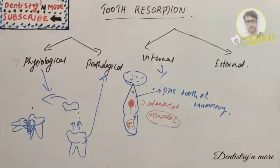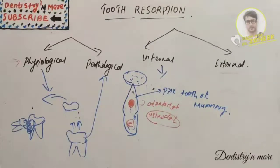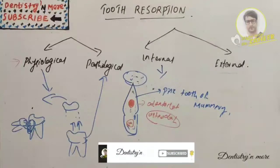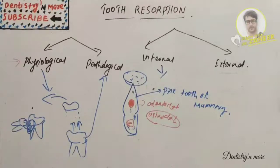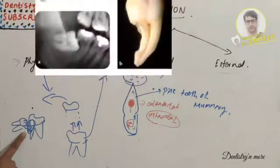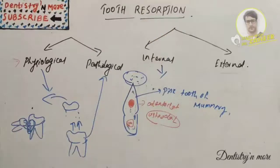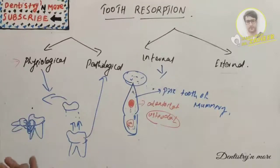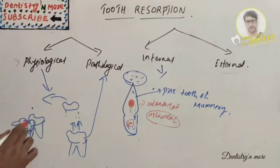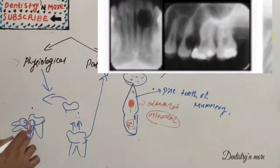External resorption refers to an attack on the root's external edges, slowly dissolving and weakening the tooth base until the tooth eventually weakens. External root resorption can be localized or generalized, with the major cause being impaction, and sometimes the cause is idiopathic. It affects the surface of the root near the apex, or the crown in the case of an impacted tooth — sometimes the crown, sometimes the root, sometimes both.